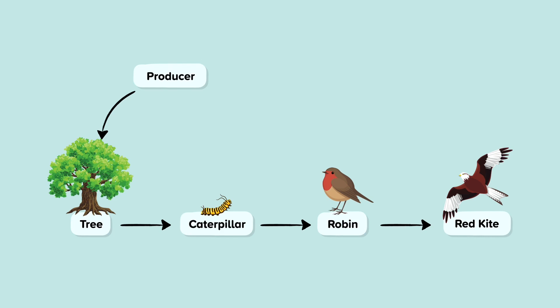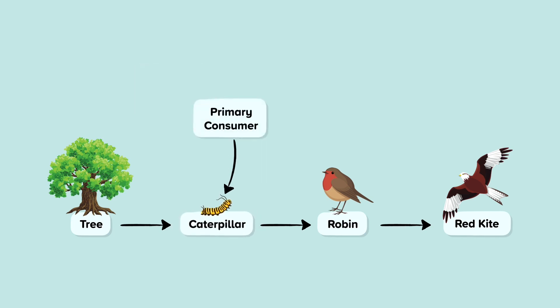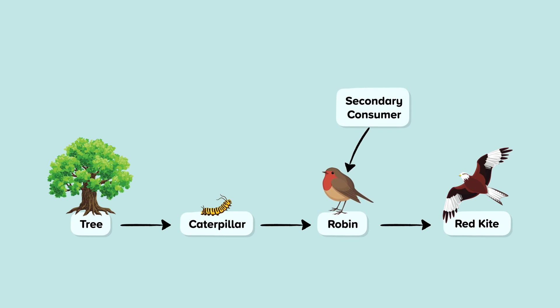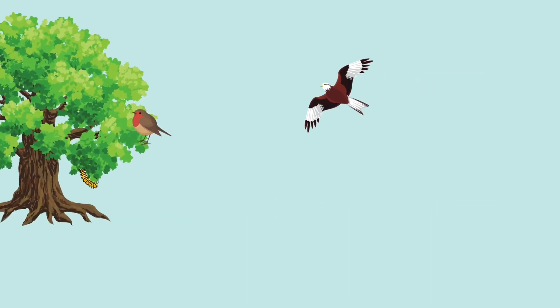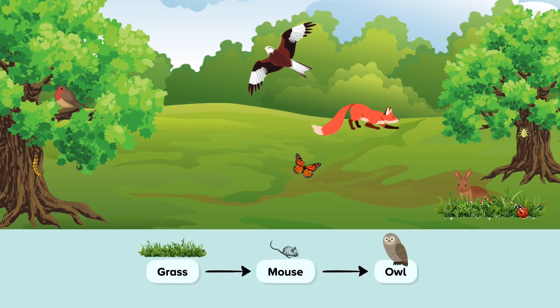Primary consumers are herbivores or omnivores. We then have secondary and tertiary consumers, and occasionally a quaternary consumer. A food chain shows how the energy is passed through the system. In this example, the grass stores energy from sunlight through photosynthesis. When the mouse eats the grass, the energy passes through the food chain, with the arrow showing how this energy is transferred from one organism to the next, in this case from the mouse to the owl.